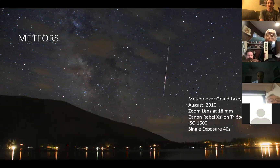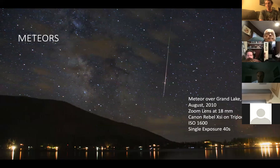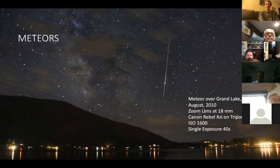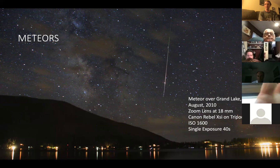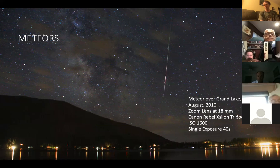It's also great for meteors — you can open the shutter and just wait, and hopefully a meteor will go through the image. You just do that over and over, and after a while you'll hopefully get a meteor shot like this one: taken in Colorado above Grand Lake, about a 40-second exposure. You can see the Milky Way — unfortunately there were some clouds, but I think they kind of add to the picture.